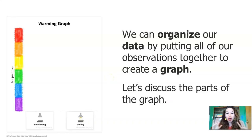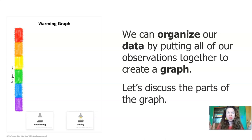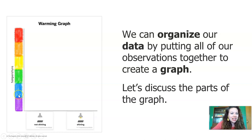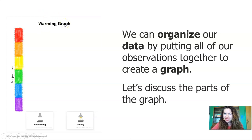Now we're going to do something that all scientists do — we're going to organize our data by putting our observations together on a graph. Graphs are used to organize data so that we can look at it and make sense of it. It makes it easier for our brains to understand and figure it out. Let's talk about the parts of the graph. We can see that it has a title, almost like a book has a title, and the title tells us what the graph is about. This is the warming graph — we've been studying how different surfaces get warmed up.